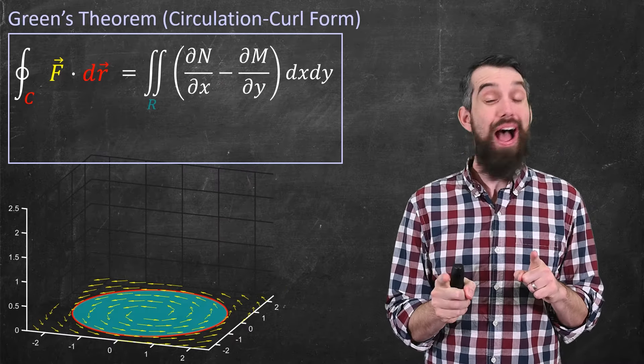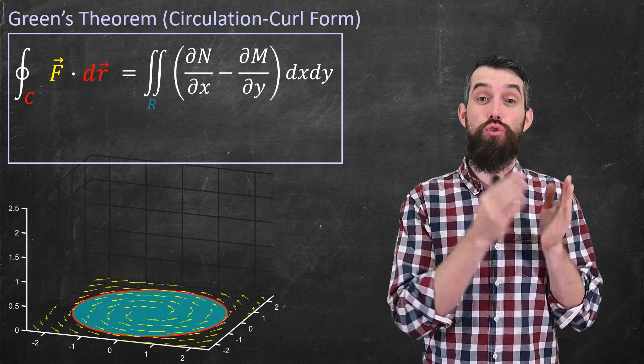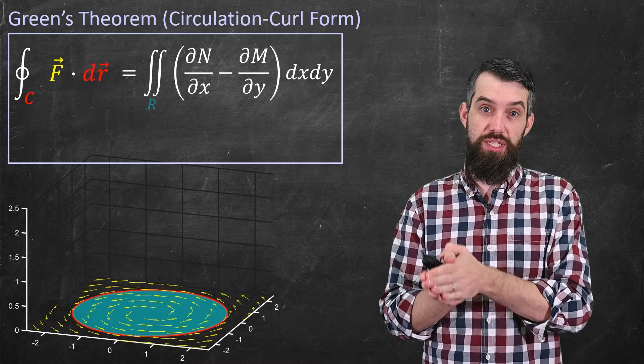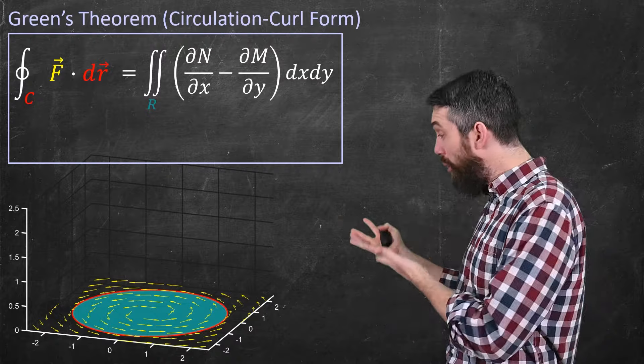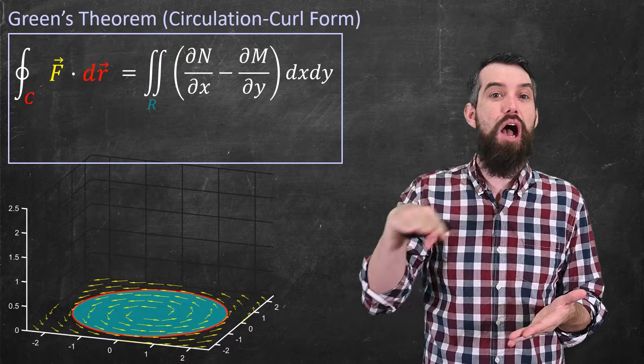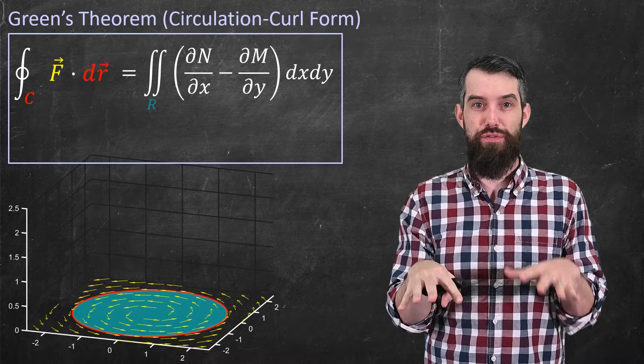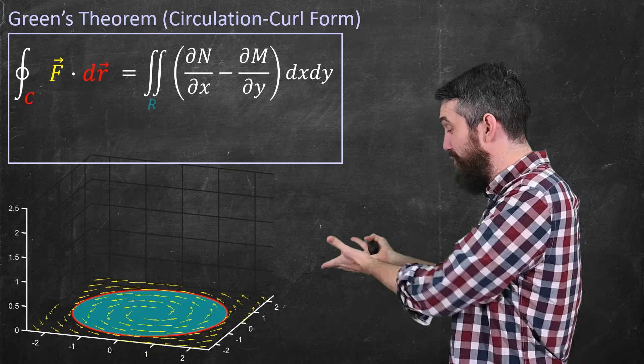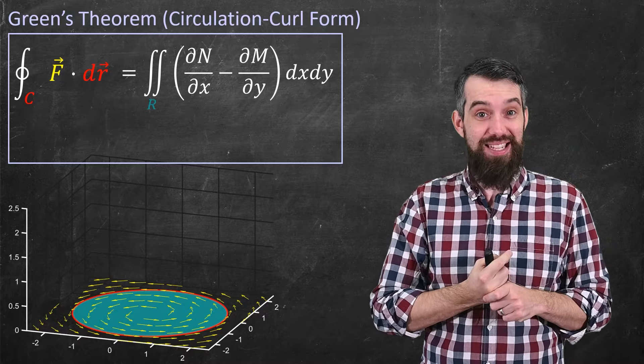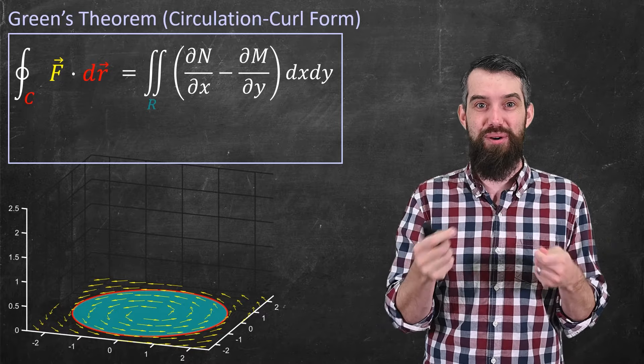Before we get to Stokes' Theorem, I want to go back a little bit and talk about Green's Theorem, because in many ways Stokes' Theorem is a generalization of Green's Theorem. So the picture for Green's Theorem is more or less the same scenario, it's just everything exists down on the plane. It's a two-dimensional version of it. And because I'm going to upgrade to three dimensions, I just drew the two dimensions in the plane, but I included the third axis, because we want to add some stuff there in a little bit.